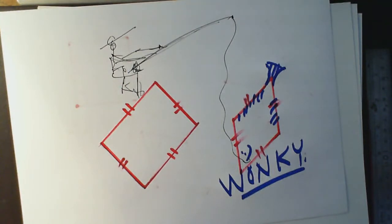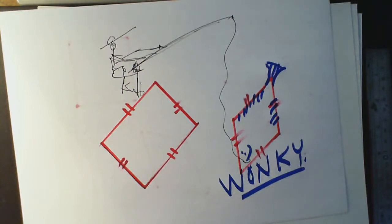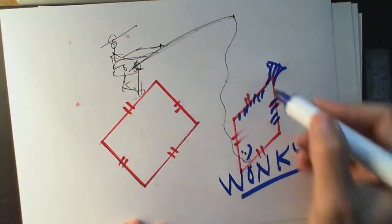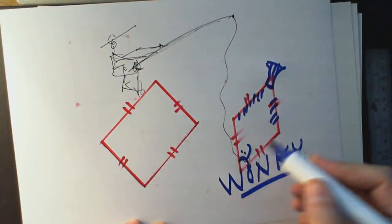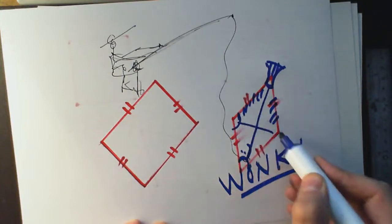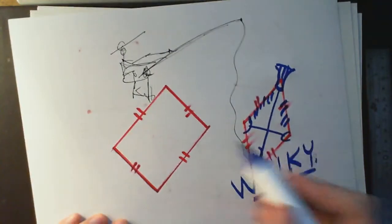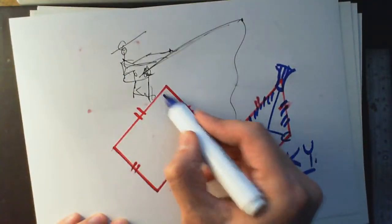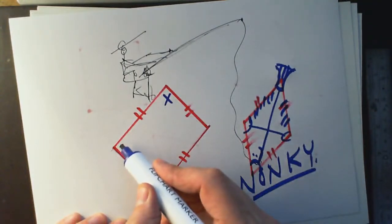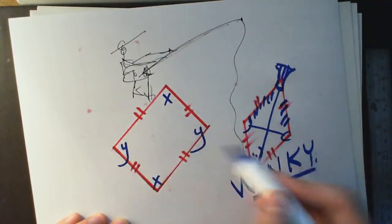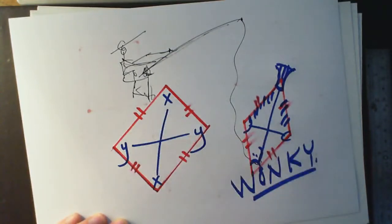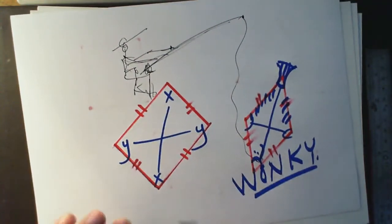It does not have right angles. If you did have a room like this it would be quite tricky to put your furniture in the corners because there are no right angles. In this shape, the angles on opposite sides are equal — and this is a rhombus.